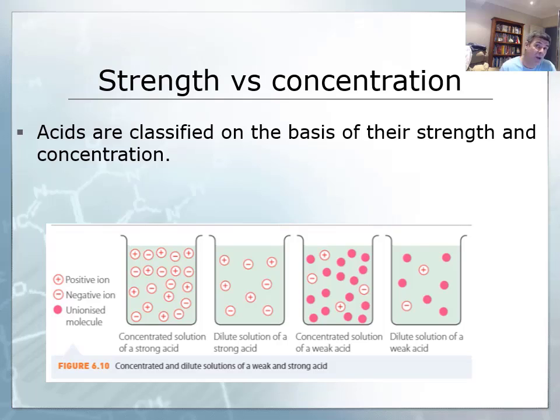The diagram shows how we can have all four of these different descriptors when we describe acid solutions. The first picture shows something which is both strong and concentrated.